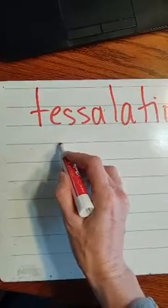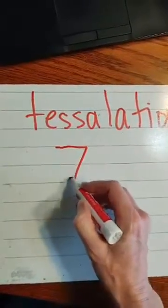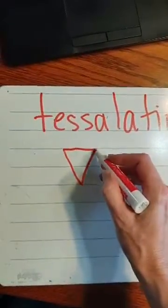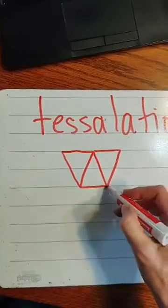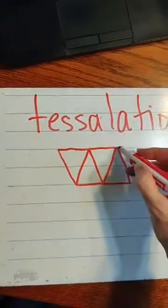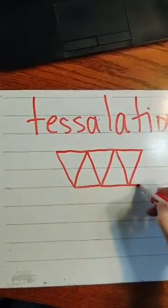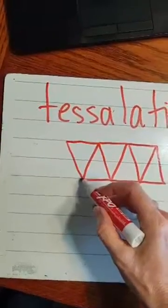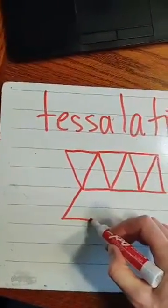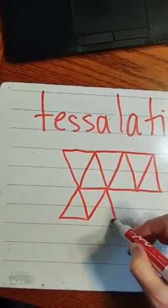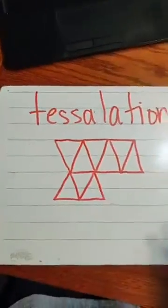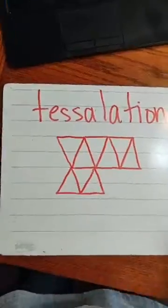So if I was going to do a tiling pattern or a tessellation with triangles here, I would tile it like this. And I'm using triangles. There's no overlapping, and there is no gaps. And I can always do another row here, just like that. So that would be a tessellation with triangles.